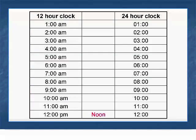The 12-hour clock has one number to the left of the colon sign from 1 a.m. to 9 a.m. The 24-hour clock has two numbers to the left of the colon sign throughout. If the hour is less than 10, a zero is added to the left of the number.